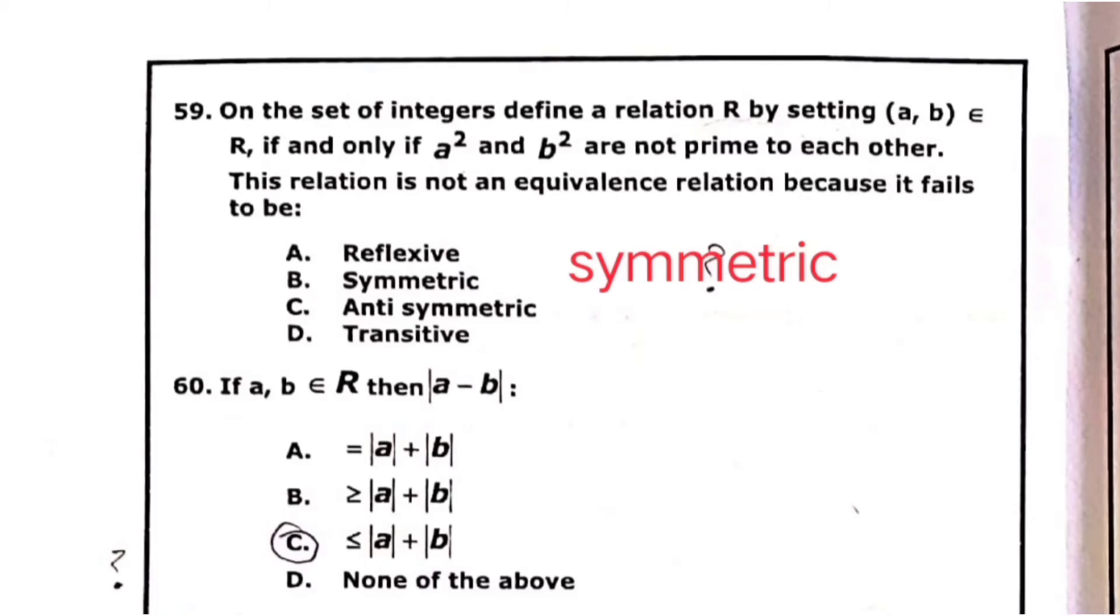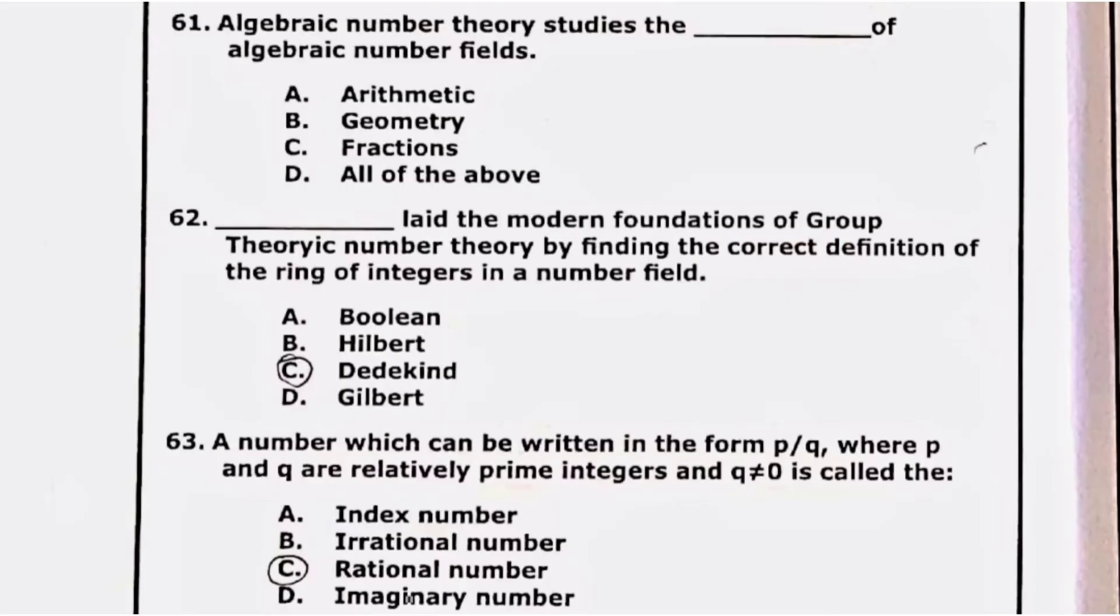60: If A, B belongs to real numbers then A minus B is less than or equal to A plus B. The option C was correct.